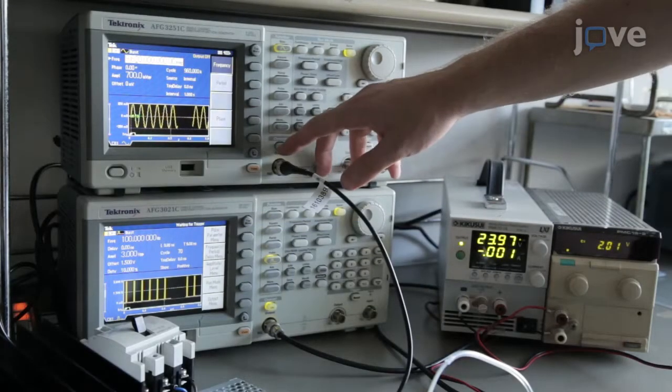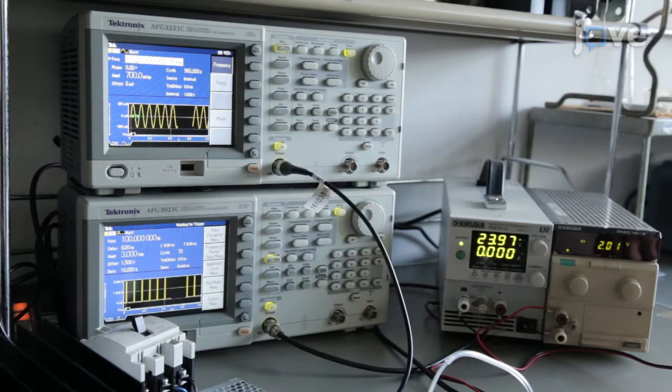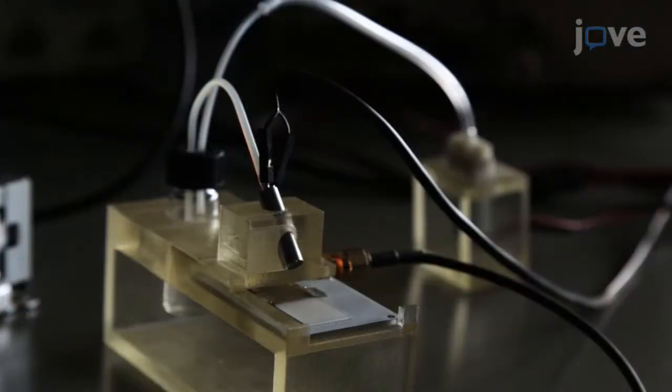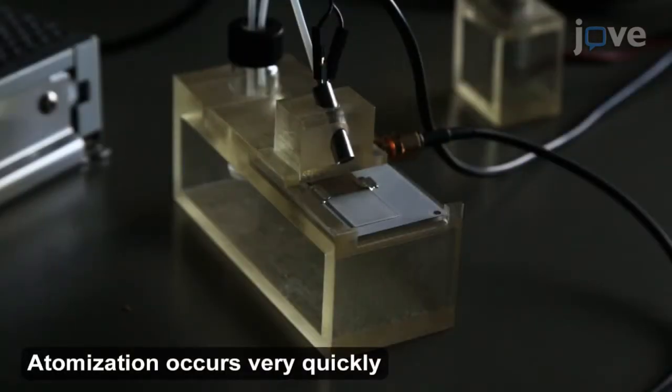Apply the RF burst signal to the device for as long as needed to atomize the droplet. Observe the surface of the device to witness atomization and to inspect the remaining liquid droplet.